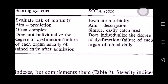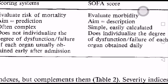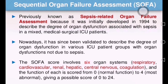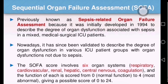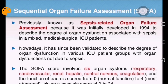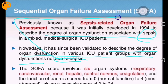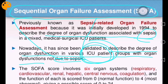The SOFA score is used to evaluate morbidity; it is simple, easily calculated, and individualizes the degree of organ dysfunction. It was previously known as the Sepsis-Related Organ Failure Assessment because it was initially related to the degree of organ dysfunction in sepsis patients. Now it is used for describing organ dysfunction in various ICU patients not necessarily related to sepsis — that is why it was renamed the Sequential Organ Failure Assessment. QSOFA is used outside ICU; SOFA is specifically for ICU patients.